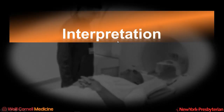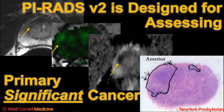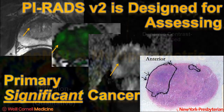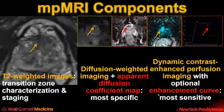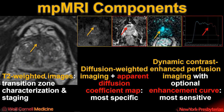PIRADS is designed for assessing primary significant prostate cancer. It's multi-parametric, including T2-weighted imaging, dynamic contrast enhanced imaging, and diffusion-weighted imaging. Spectroscopic imaging is considered optional. T2-weighted images are crucial for evaluating transition zone lesions and for staging. Diffusion-weighted imaging is the most specific component and includes a high B-value DWI and ADC map. Dynamic contrast enhanced imaging now primarily reflects the early enhancement component, and perfusion maps and enhancement curves are optional.